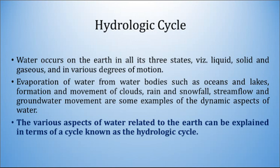Basically, hydrology starts with the hydrologic cycle, popularly known as the water cycle. Water occurs on the earth in its three states — liquid, solid and gaseous — and in various degrees of motion. Evaporation of water from water bodies such as oceans and lakes, formation and movement of clouds, rain and snowfall, stream flow and groundwater movement are some examples of the dynamic aspects of water. The various aspects of water related to earth can be explained in terms of a cycle known as the hydrologic cycle or water cycle.